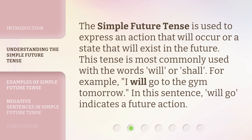The simple future tense is used to express an action that will occur or a state that will exist in the future. This tense is most commonly used with the words 'will' or 'shall.' For example: 'I will go to the gym tomorrow.' In this sentence, 'will go' indicates a future action.